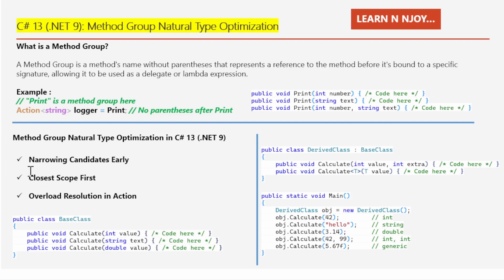Then step number two: closest scope first. The compiler always starts by checking the class you are working with. Let's say derived class first. If it finds a matching method there, it uses that one. But if it doesn't find anything in the derived class, it goes and checks the base class for a match. So the closer the method is to where you're calling it from, the higher priority it gets.